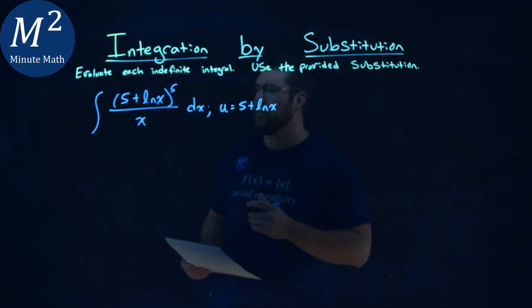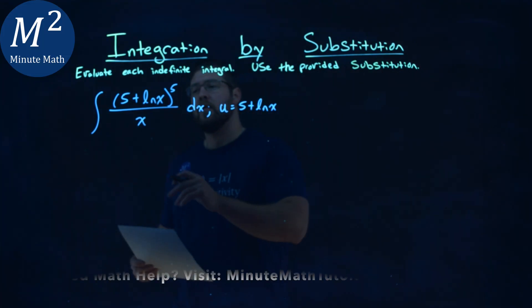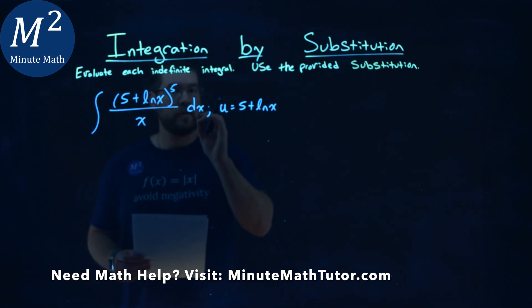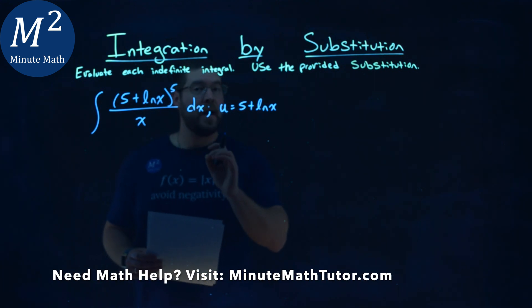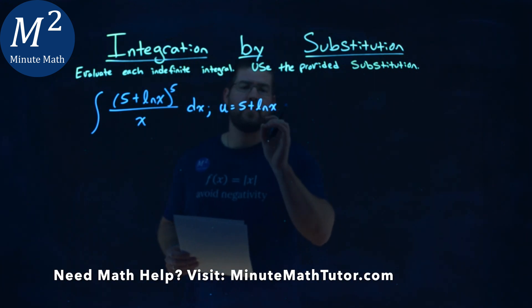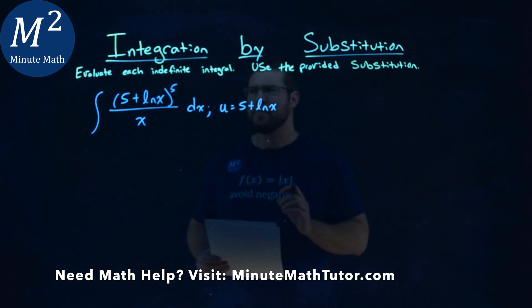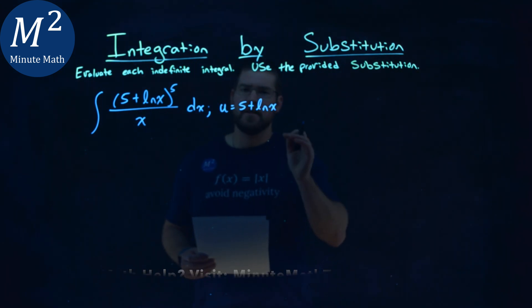substitution. We're given this problem right here, the integral of (5 + ln(x))^5 over x dx, and we're given a u value of 5 + ln(x), and we need to evaluate this indefinite integral.